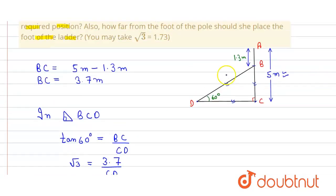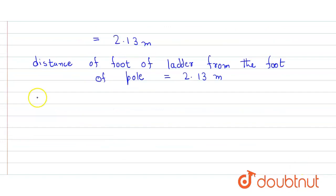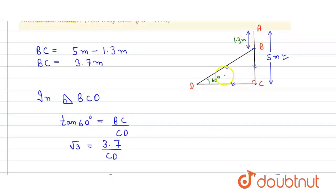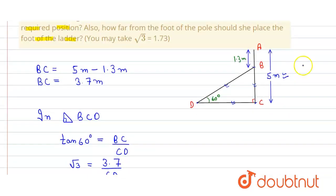In the second part, we also have to find the length of the ladder, which is BD. Again, in right angle triangle BCD, we take sin 60 degrees. Sin 60 degrees equals BC divided by BD.